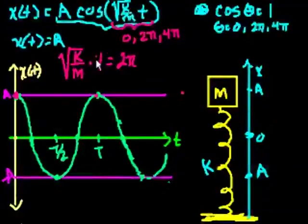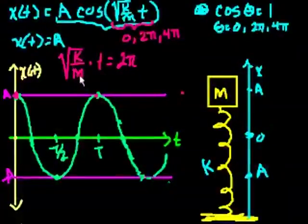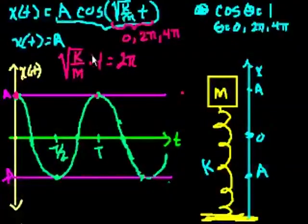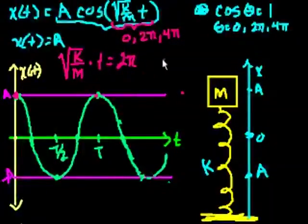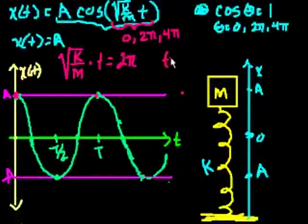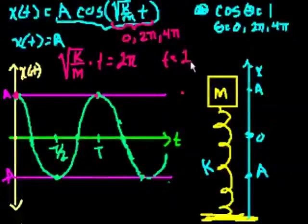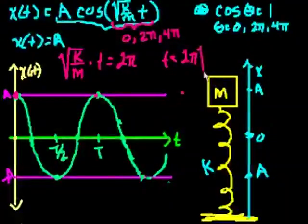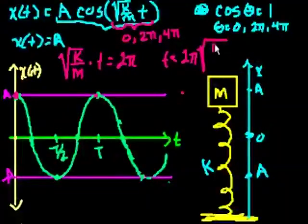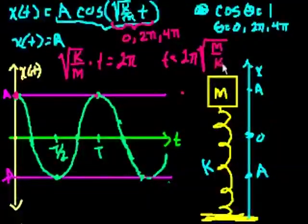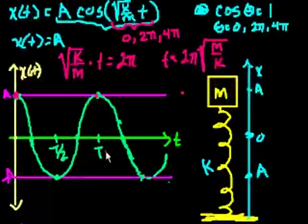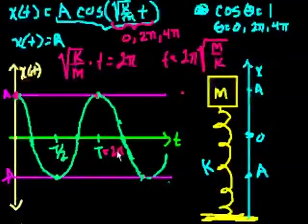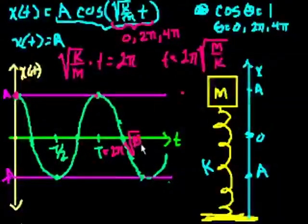Or another way of thinking about it is let's multiply both sides of this equation times the inverse of the square root of k over m, and you get t is equal to 2 pi times the square root. And it's going to be the inverse of this, right? Of m over k. And there we have the period of this function. This is going to be equal to 2 pi times the square root of m over k.